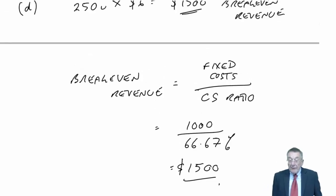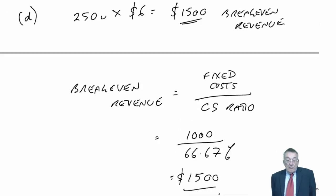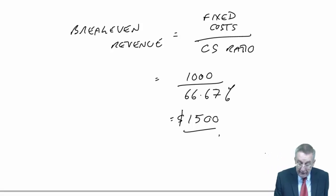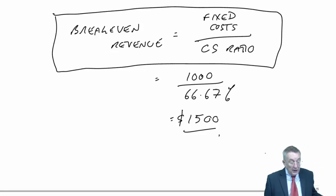Having done the earlier bits, it doesn't matter which way you do it. But you'll see when you come to practice questions, there'll be plenty of times when either the information is in a different way or you want to go straight to break-even revenue. Break-even revenue is fixed costs divided by CS ratio.